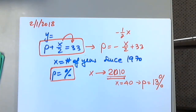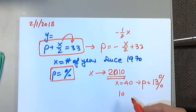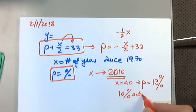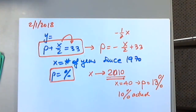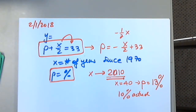The chart says 10% for 2010. So 10% is the actual value from the chart, and 13% is what we get using the mathematical model. The model is not perfect. Does it overestimate or underestimate? It overestimates. By how much? By 3 percentage points.